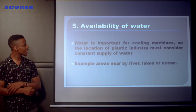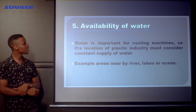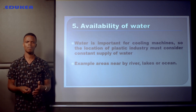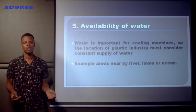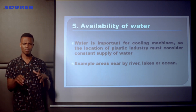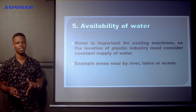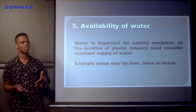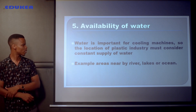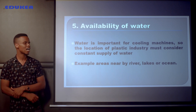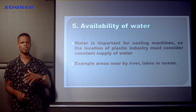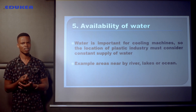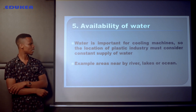Another thing to consider is the availability of water. Water is important for cooling machines, so the location of a plastic industry must consider a constant supply of water. The industry should be established in an area where there is water availability. Those machines inside the industry need water to cool down. For example, areas near rivers, lakes, or the ocean are good for establishing a plastic industry, because these machines use electricity and generate a lot of heat, requiring water for cooling.